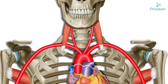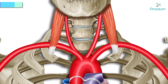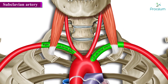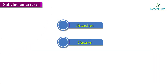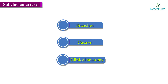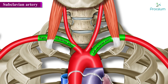The topic of discussion here will be the anatomy of the subclavian artery. In this module we are going to discuss the branches, course, and relevant clinical anatomy associated with the subclavian artery. We have two subclavian arteries — one on the left and another on the right.